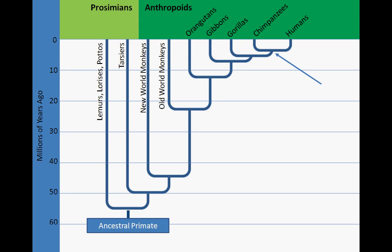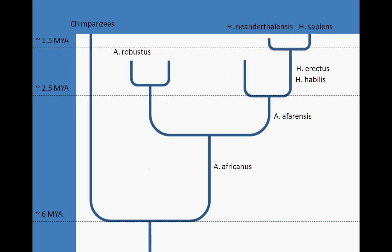All of hominid evolution has its roots in the same ancestral primate that gave rise to today's monkeys, apes, and chimpanzees. The members of the species Homo sapiens alive on Earth today are merely one twig of an extensive tree containing all the hominid species that have ever lived.